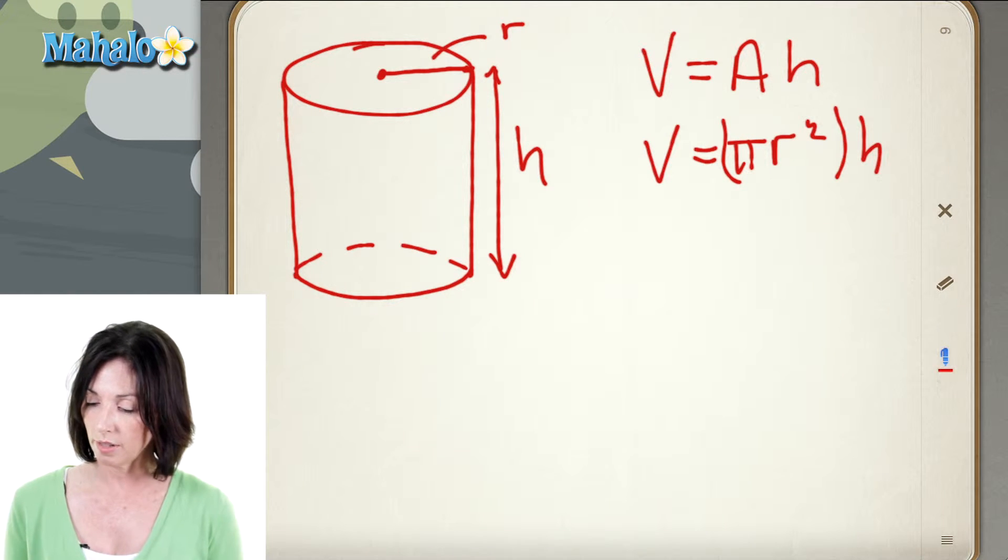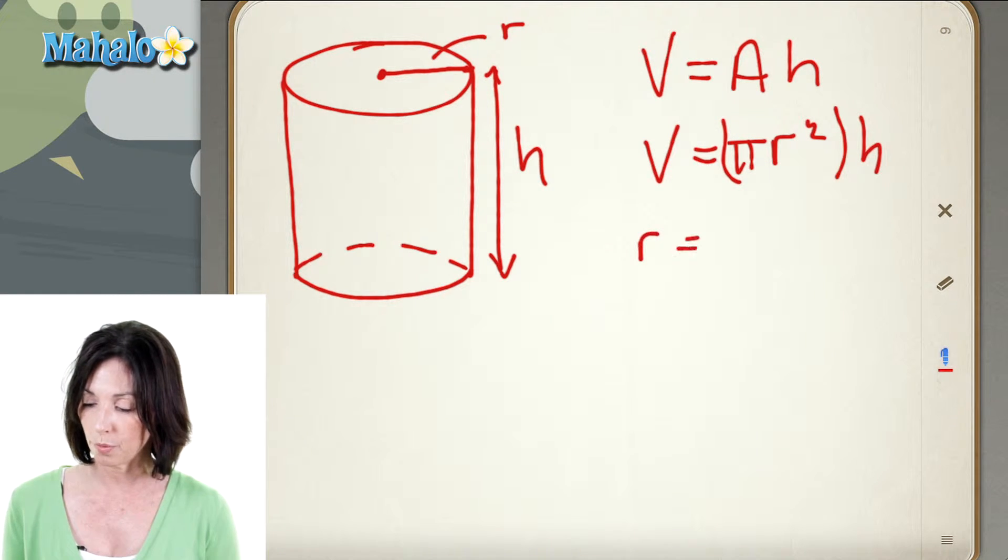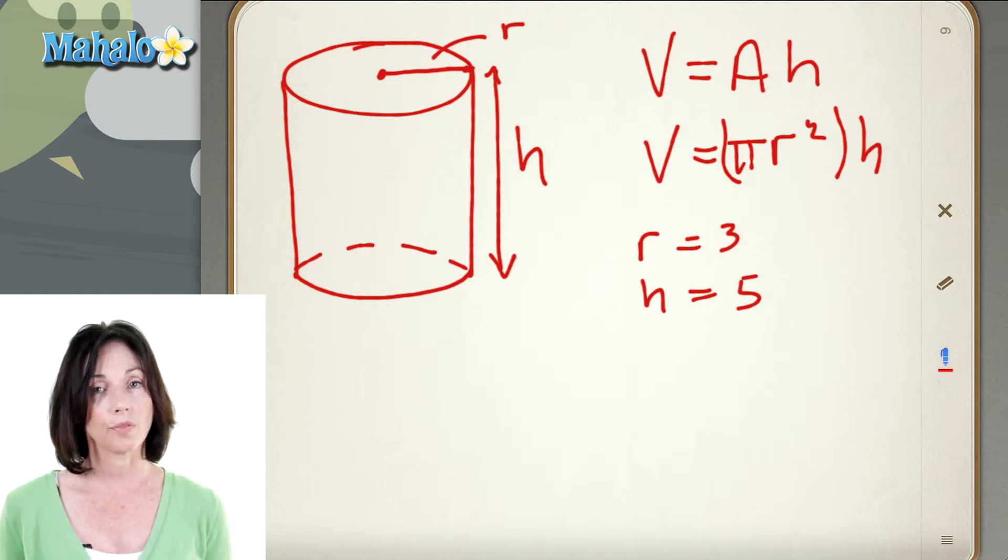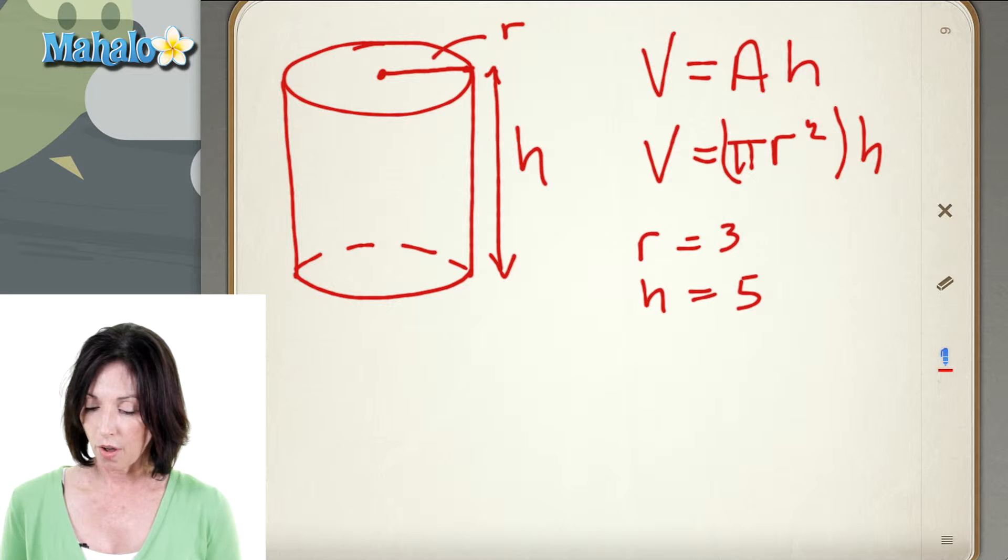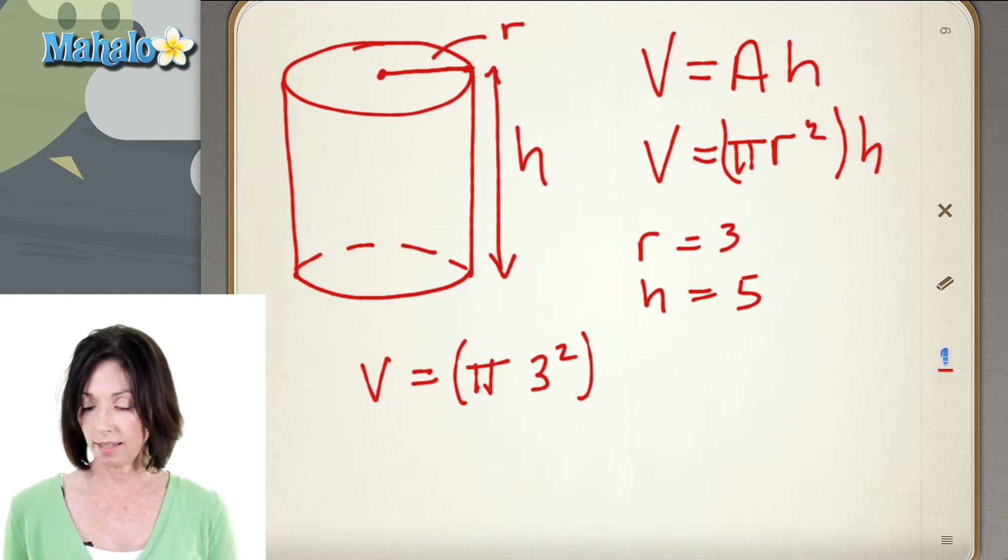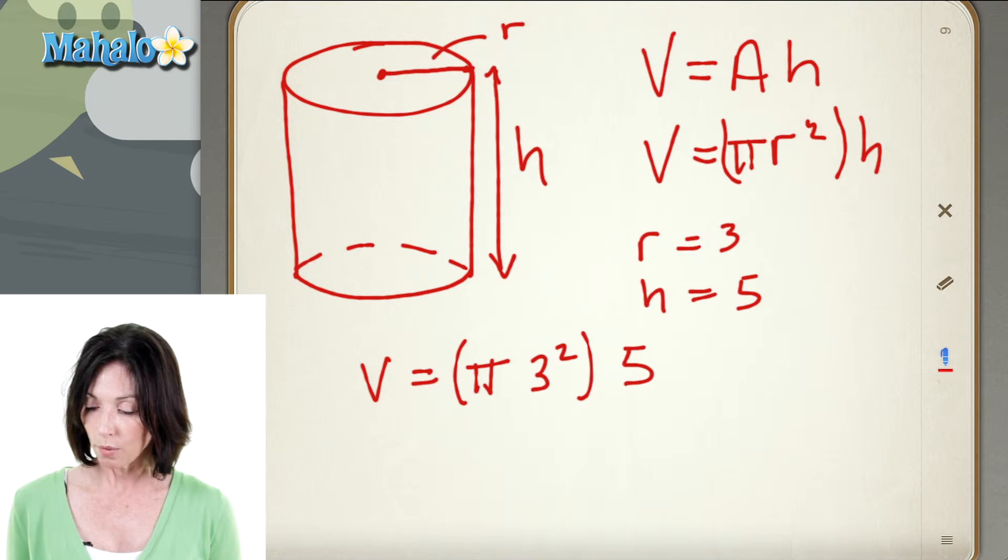So let's say our cylinder has a radius of three and a height of five. Let's find its volume. The volume is equal to pi. Now we're going to take r squared, so that will be three squared, times the height, which is five.